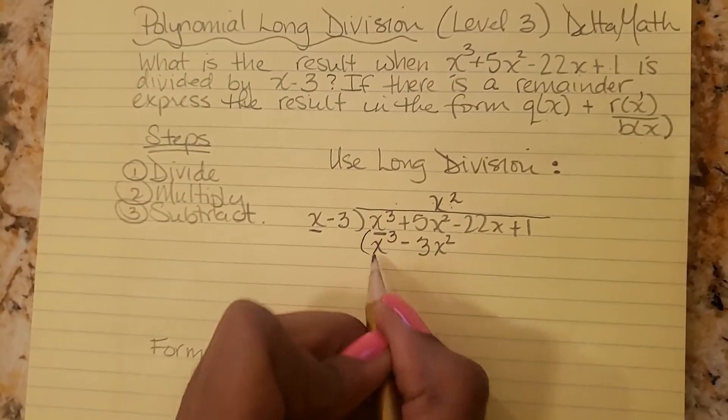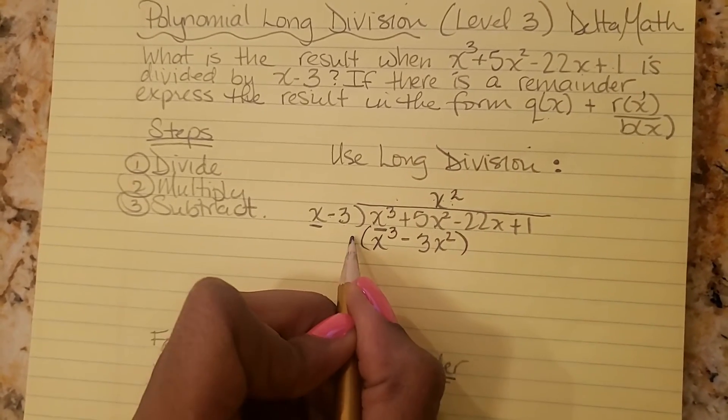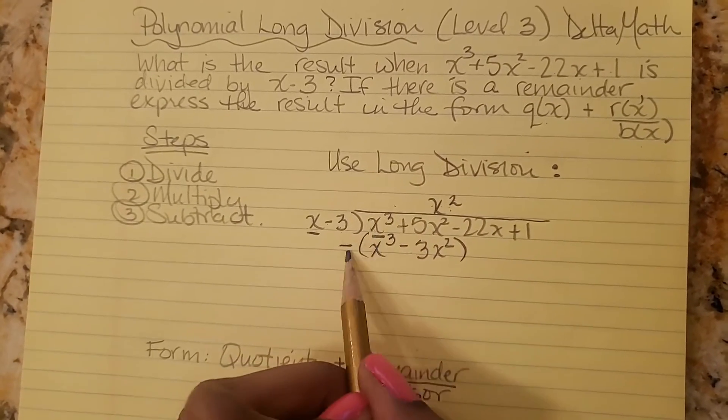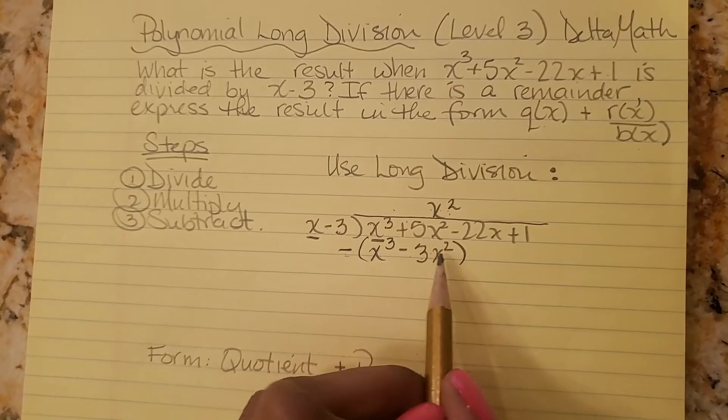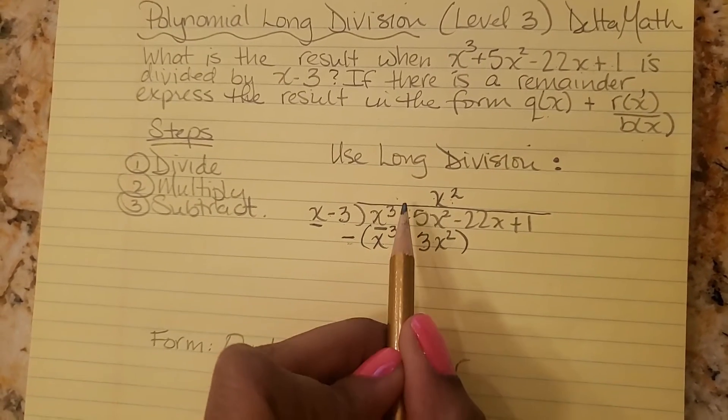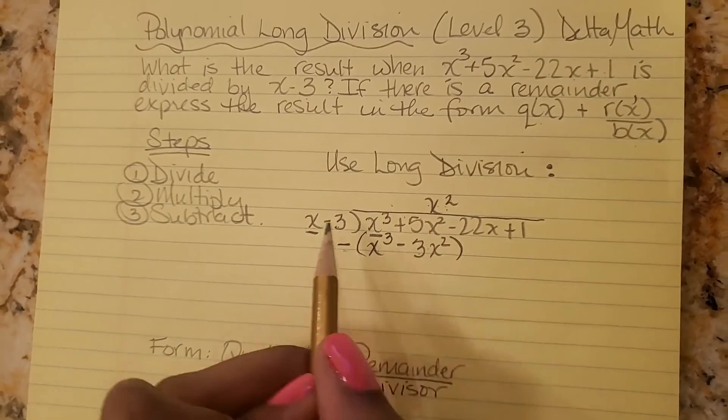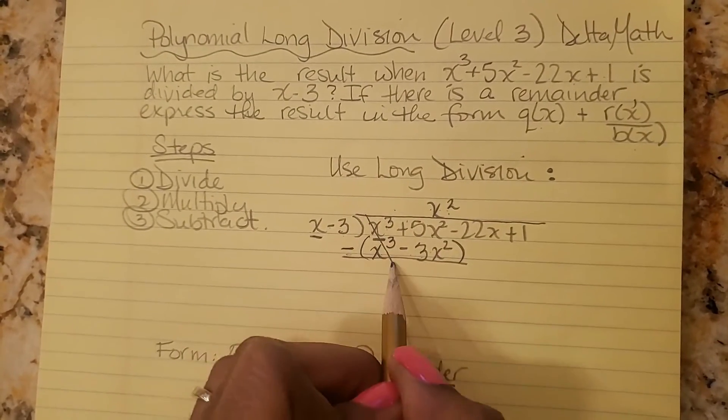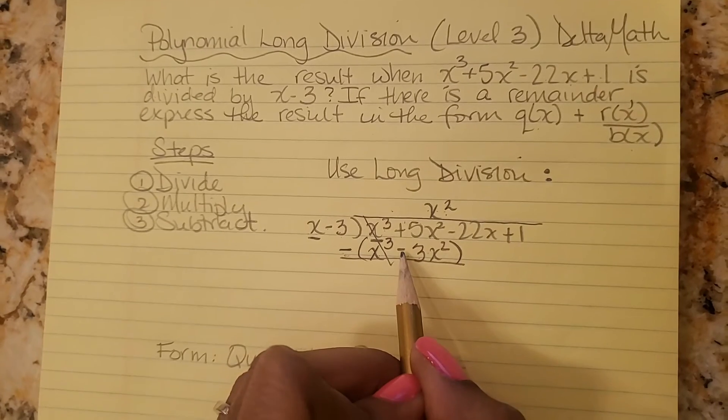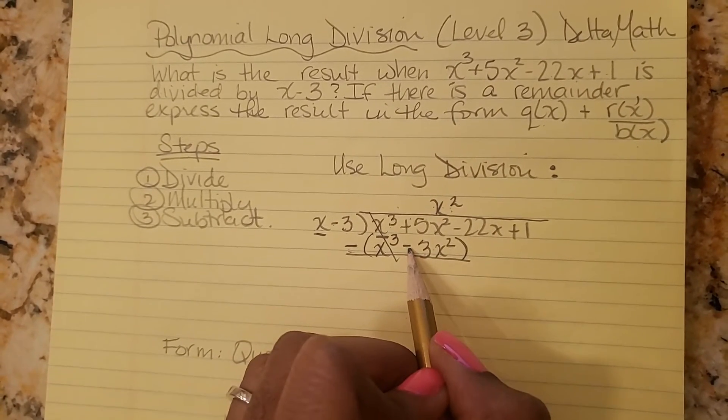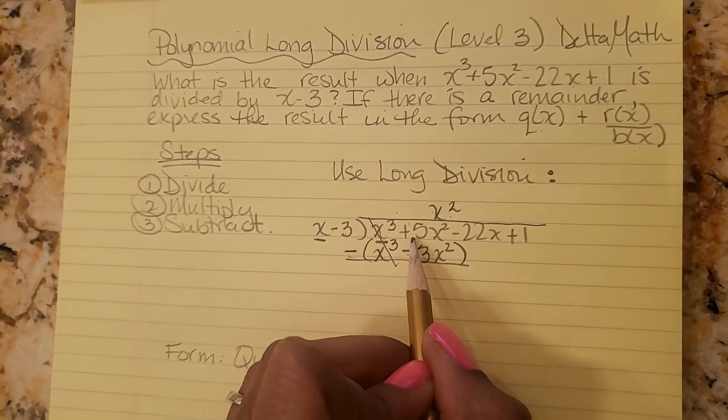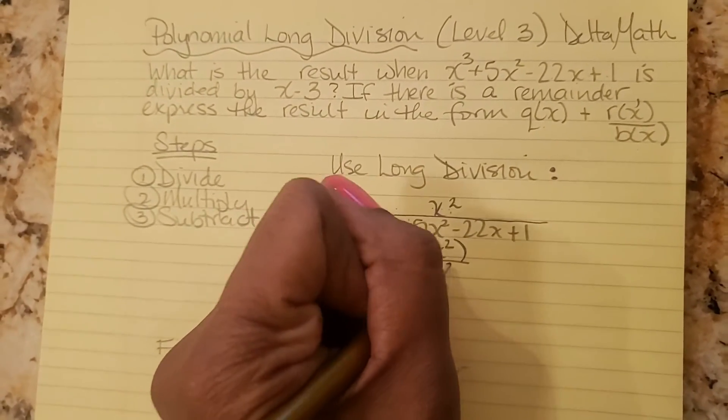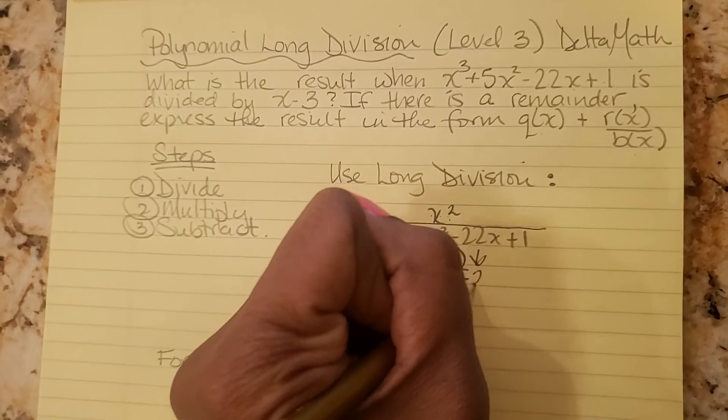And the next step is to subtract. So let's put our parentheses around this entire polynomial to show that we are subtracting each like term. We're not going to forget and add vertically and end up with the wrong answer. So we're going to do x cubed minus x cubed, which is 0. 5x squared minus negative 3x squared, and a negative means positive. So we're going to do 5x squared plus 3x squared, which is 8x squared. And bring down the minus 22x.